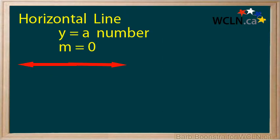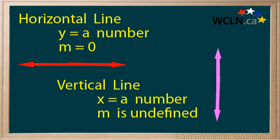To summarize, a horizontal line is given by the equation y equals a number. The slope of a horizontal line is 0. A vertical line has the equation x equals a number. The slope of a vertical line is undefined.